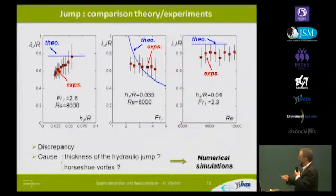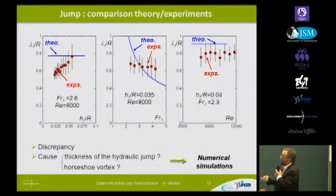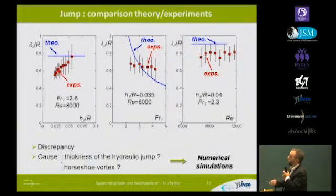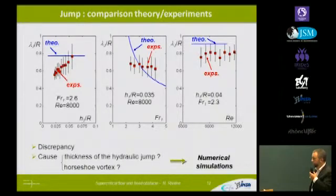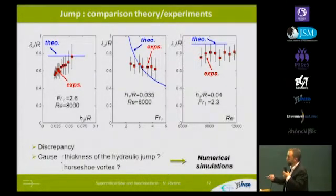However, when we compare the results from the analytical model to the experiments, the agreement is not good at all. In our model, the main parameter is the Froude number, but in experiments we have very small dependency on this parameter. Furthermore, the detachment length of the jump should not depend on the width of the obstacle according to the model, yet we see a very strong dependency. So we have a very strong discrepancy. I proposed two causes: the thickness of the jump and the horseshoe vortex.